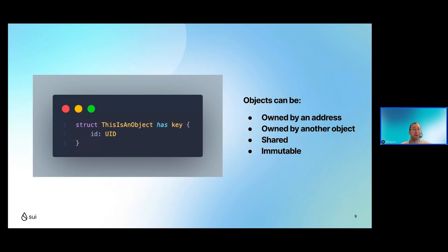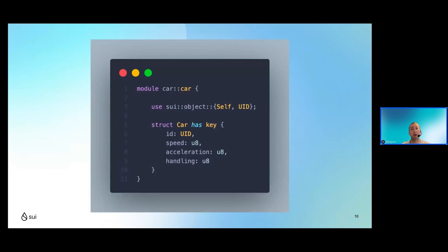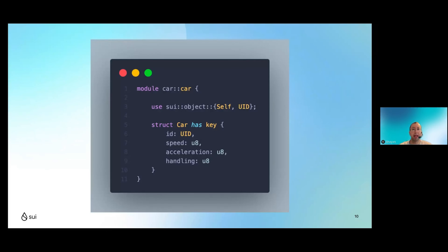Let's go through the first snippet of the car code — you can find this on the GitHub repo. At the very top on line one you'll see 'module car::car'. 'Module' refers to the fact that it's a smart contract; the first 'car' is the package name — the same one we typed when we ran 'sui move new car' — and the second 'car' is this particular module's name. Importing modules uses Rust-style double colon notation, so if you've programmed in Rust before, this should feel familiar.